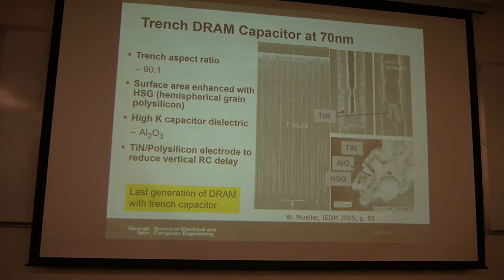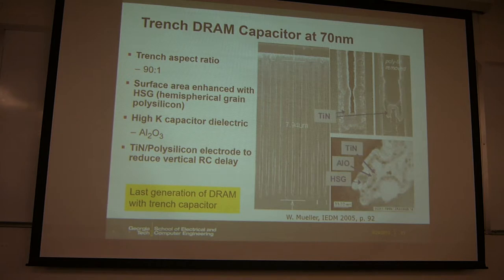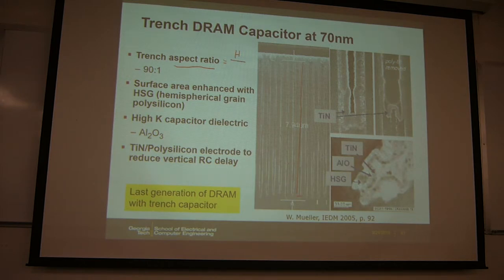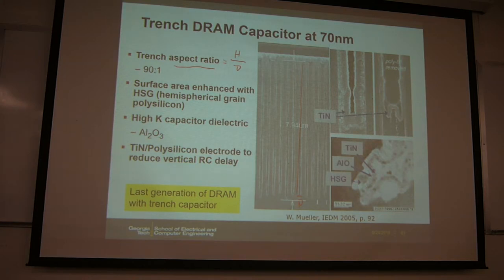Let's look at the trench capacitor cell and the challenges for scaling. At the 70 nanometer node — the last generation of trench capacitor cells — the trench is very, very deep into the substrate. The aspect ratio, meaning the height divided by the diameter of the trench, is about 90 to 1. Once you have such a deep trench, it becomes very hard to refill the dielectric or electrode material due to fabrication issues.